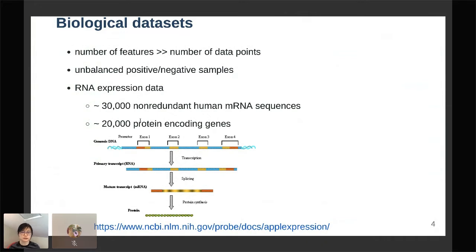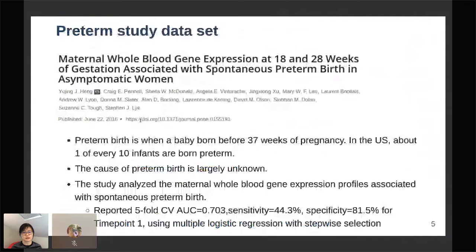I decided to look at a dataset on studying preterm birth using gene expression. This is data from Myhand et al. They looked at gene expression from pregnant women at two time points. Preterm birth is when the baby was born before 37 weeks and this accounts for one in 10 births in the U.S.